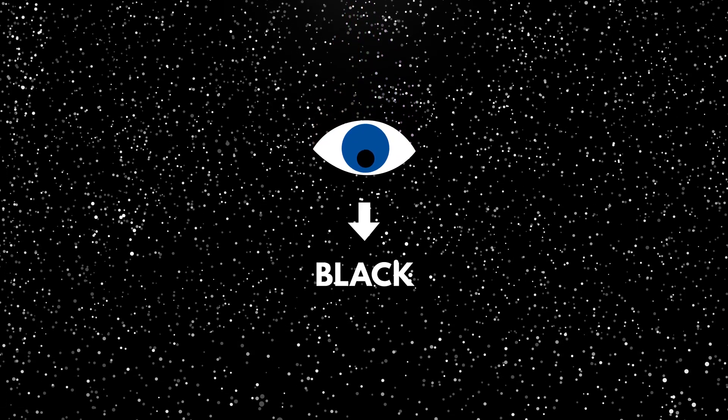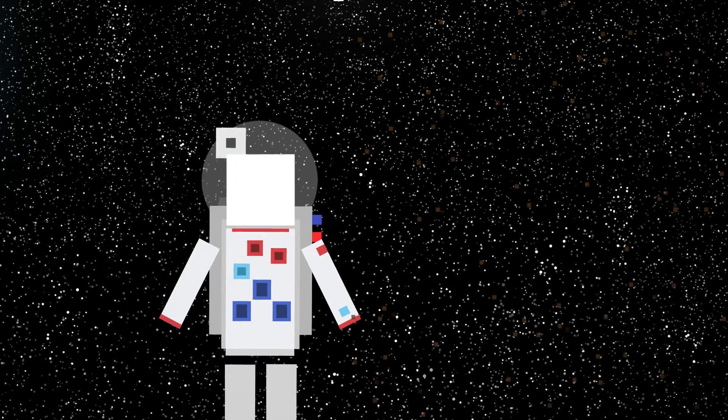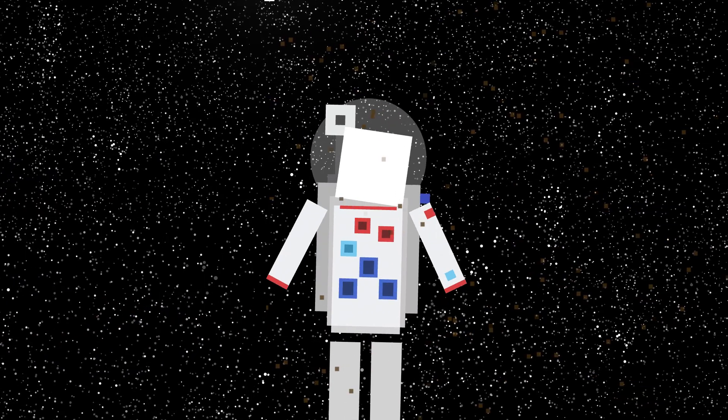The reason why we see space as black is because in space, the light doesn't have a lot of cosmic dust to bounce off of. But it does have some,